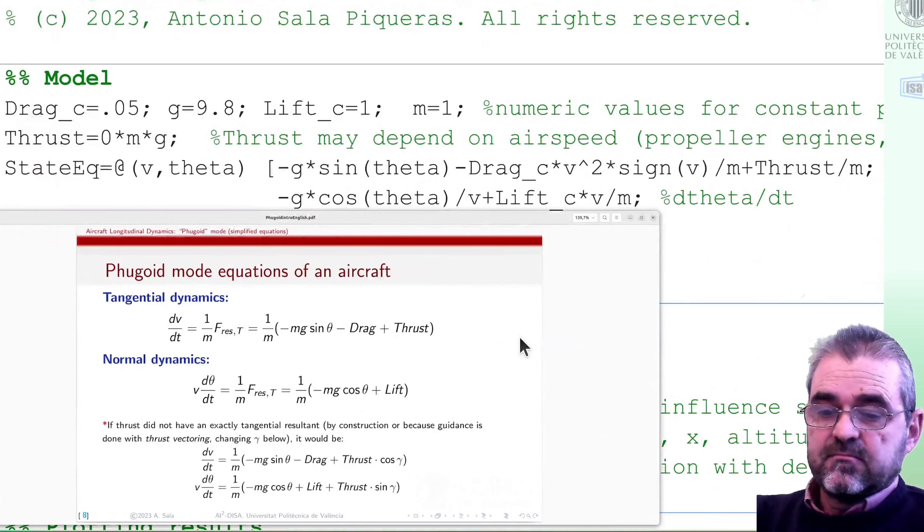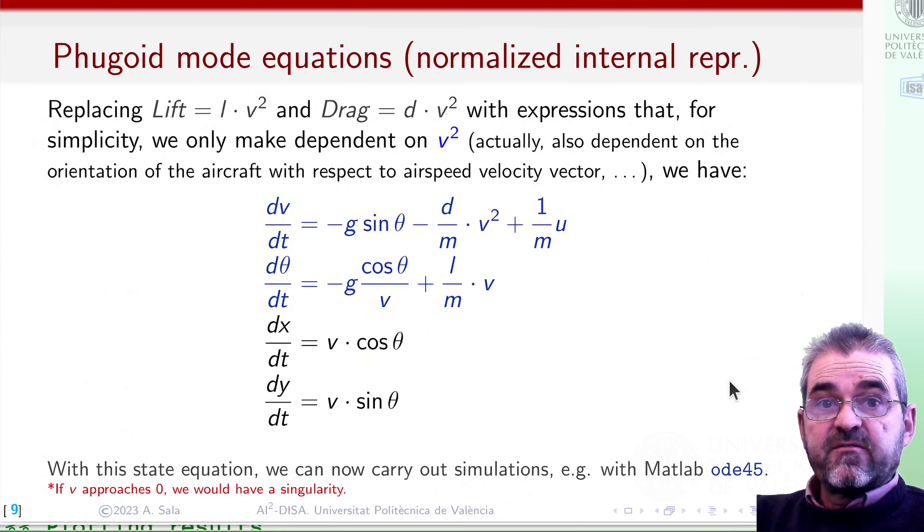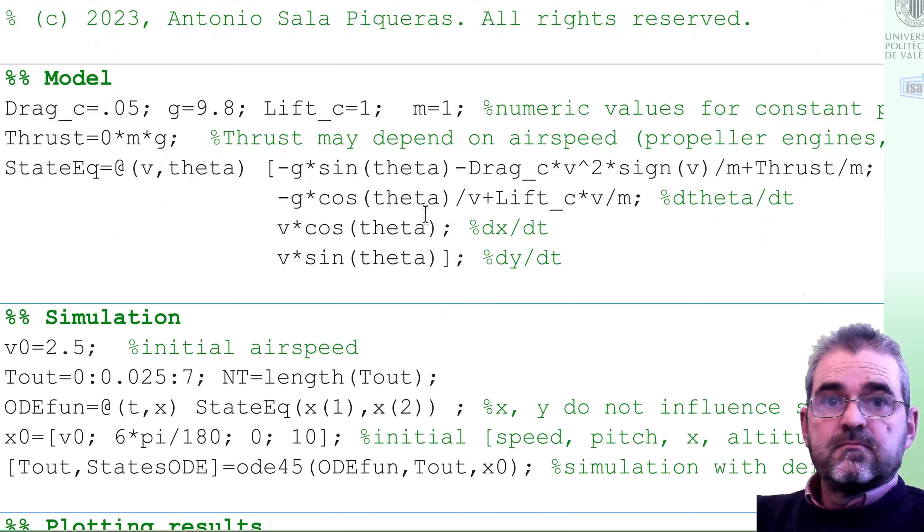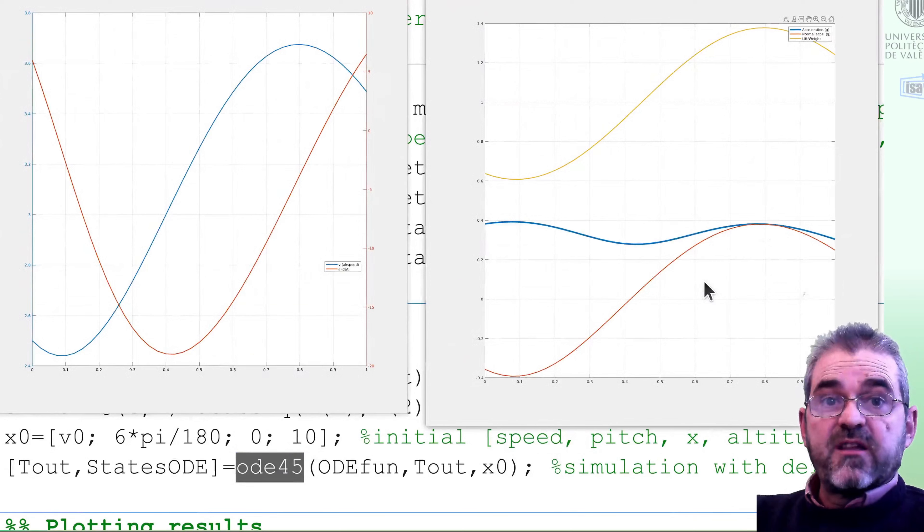Let's summarize. In this video, we have shown MATLAB code to simulate these four equations, which constitute the simplified model of the so-called fugoid mode in flight dynamics.